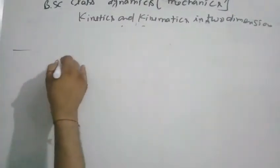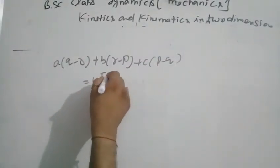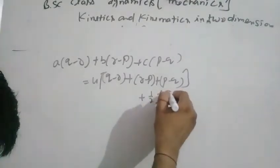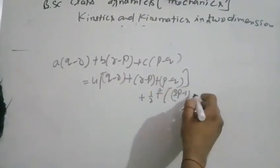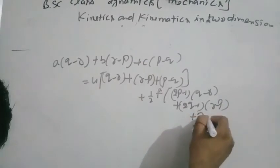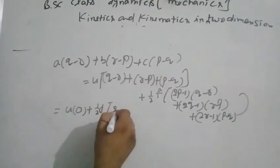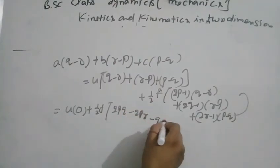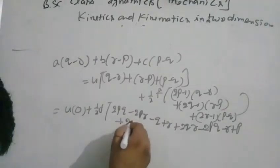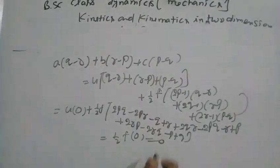This gives a(q minus r) plus b(r minus p) plus c(p minus q) equals u(q minus r plus r minus p plus p minus q) plus half f times [2p minus 1)(q minus r) plus (2q minus 1)(r minus p) plus (2r minus 1)(p minus q)]. Solving: u term becomes zero, plus half f times [2pq minus 2pr minus q plus r plus 2qr minus 2pq minus r plus p plus 2rp minus 2rq minus p plus q]. This also becomes zero, equals zero. Proved.